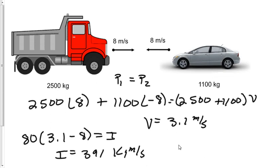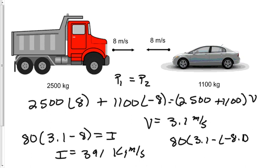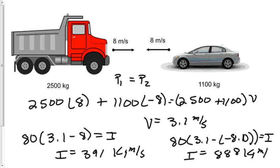Now let's do likewise for the car. The 80 kg person: multiply that person's mass times final velocity of 3.1 minus negative 8 meters per second. That comes out to be an impulse of 888 kg·m/s.